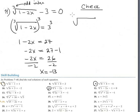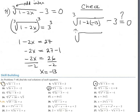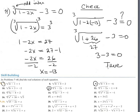Checking with the cubic root: cube root of (1 minus 2 times negative 13) minus 3 must equal 0. That's cube root of (1 plus 26) minus 3, which is cube root of 27 minus 3. Cube root of 27 is 3, and 3 minus 3 is 0. It's true — this solution is perfect.